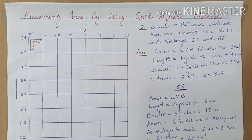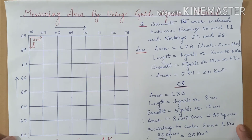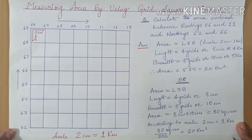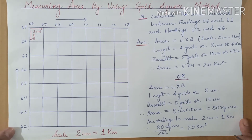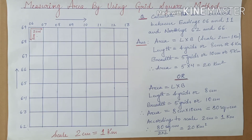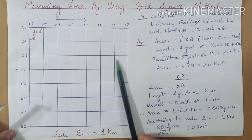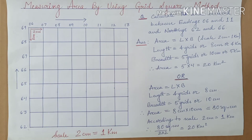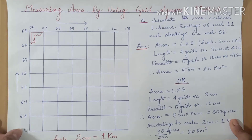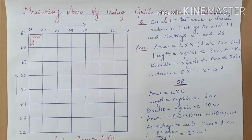Good morning students. In today's module, we will learn how to measure area by using the grid square method. In a topographical sheet, we are often asked to measure area extending up to a certain number of grids. We will start with a question, and when we look at the question, we will find the answer, which will help us understand the topic better.